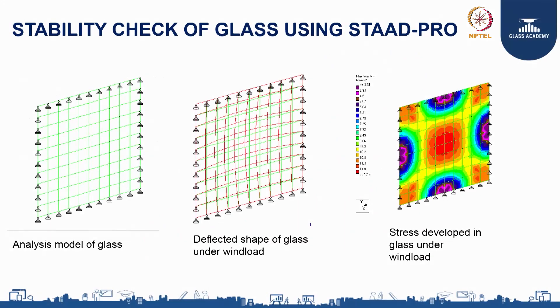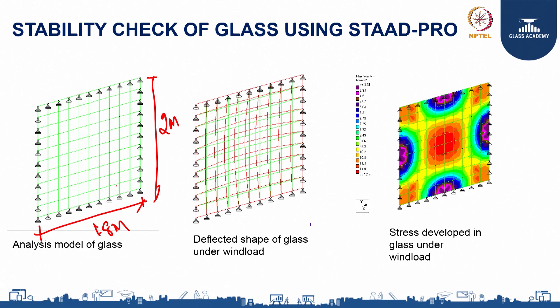If we check this using STADPRO, the same model can be used — 1.8 meters width and the height of the panel. Since structural sealant is applied, all sides of the glass panel will be supported, so all 4 edges are considered supported. Applying the wind load on the whole glass panel, we can check the deflected shape under wind load. If any live load is acting, we can apply it as a point load and check deflection and stresses using any finite element software.